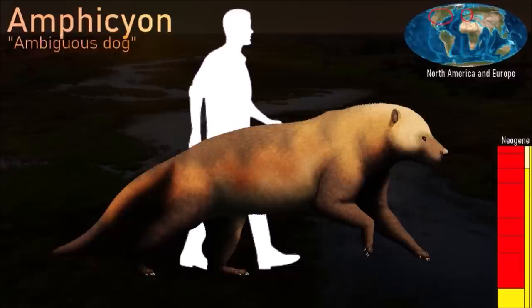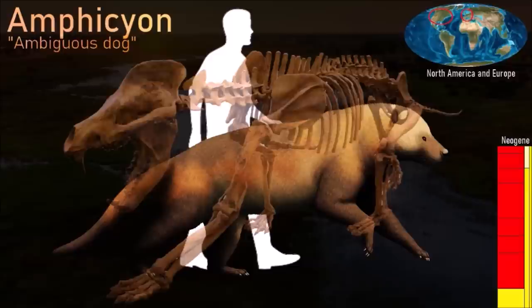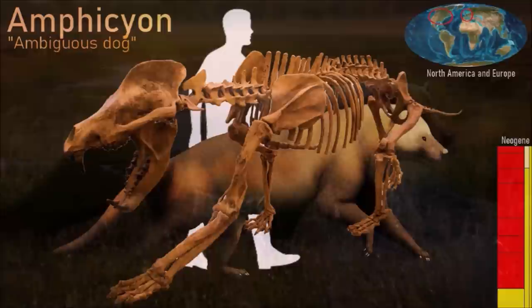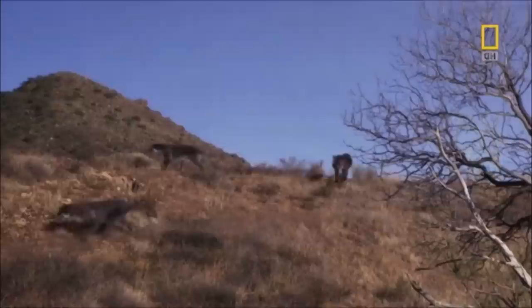With its robust limbs and skull, long tail, and wolf-like teeth, Amphicyon looked like a large dog with the build of a bear — which is why it is also known as the bear-dog. Being the largest predator in the middle Miocene of North America, it was able to kill and eat almost any animal, and also drive off other predators to scavenge their kills. It became extinct in North America but persisted a little longer in Europe, being driven to extinction by true bears.